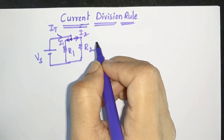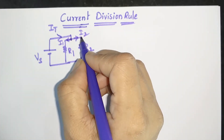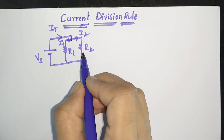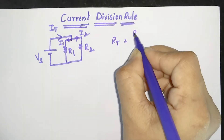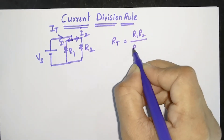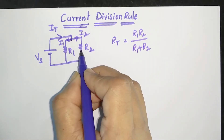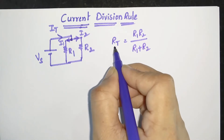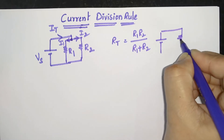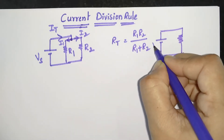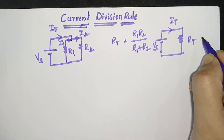Now we are trying to write the current relations for I1 and I2. Since R1 and R2 are connected in parallel, the total resistance will be R1·R2 divided by (R1 + R2). So instead of having these two resistors, they can be replaced by a single resistor RT. The simplified circuit then has Vs, total current IT, and total resistance RT.